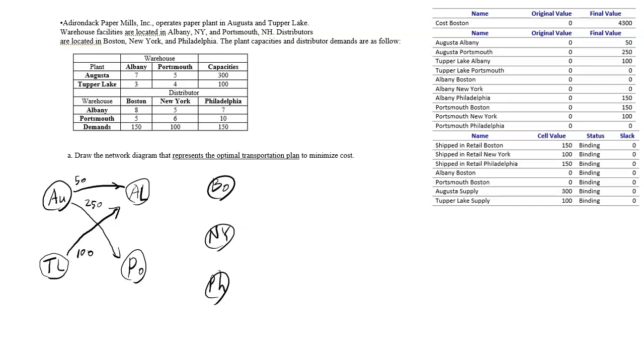And then from Albany to Philadelphia is 150. Portsmouth to Boston is 150. Portsmouth to New York is 100. That's the network diagram that represents this table.